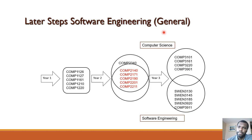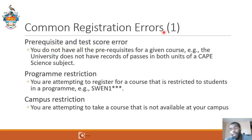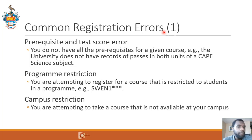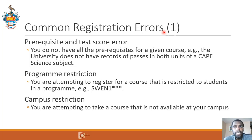When you register, you might see some errors. A prerequisite and test score error will indicate that you do not have all the prerequisites for a given course — for example, the university may not have records of passes in both units of a CAPE science subject. You may also see a program restriction error, which will happen if you're trying to register for a course restricted to students in a certain program. For example, the SWEN 1XX courses are limited to students whose declared major is Software Engineering Mobile Application Technologies, so you'll see a program restriction error if you try to register for those.